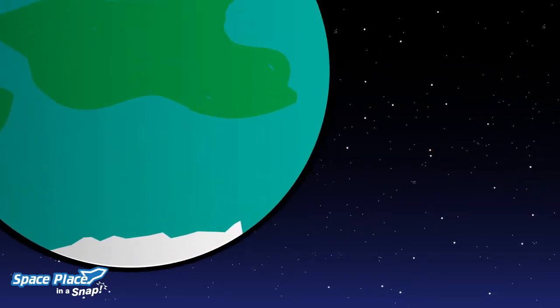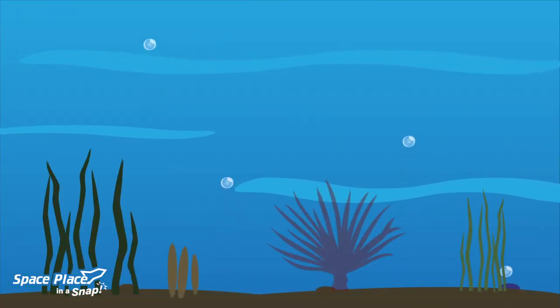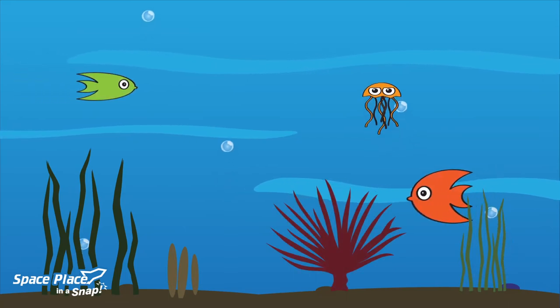A planet about this temperature could have liquid water on its surface. Water is necessary for life here on Earth, and it is probably necessary for life on other planets too.